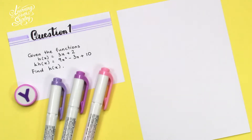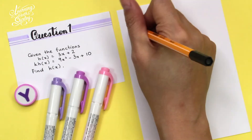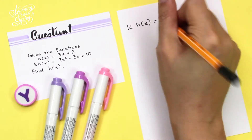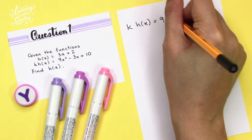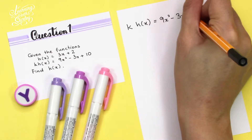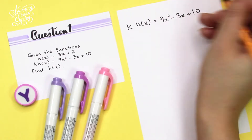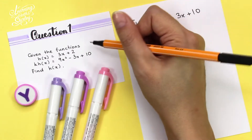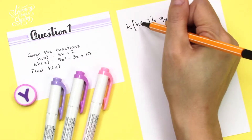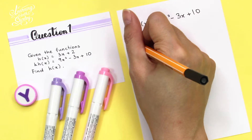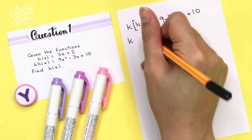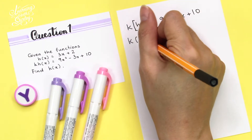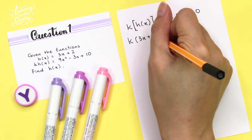First of all, we write down the k(h(x)) given: k(h(x)) = 9x² - 3x + 10. I'm going to put a square bracket because later I'm going to substitute 3x + 2 into here. So now we substitute h(x), which is 3x + 2, into the bracket.